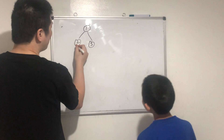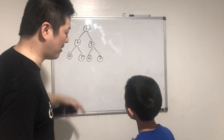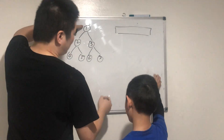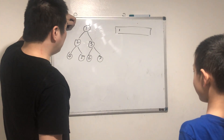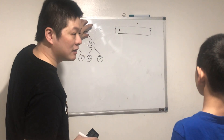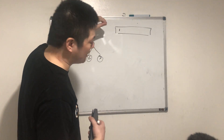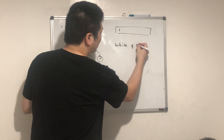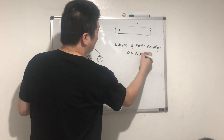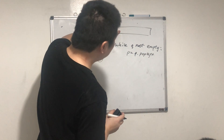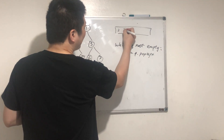Let's do the Breadth-First Search. We want to visit the nodes in 1, 2, 3, 4, 5, 6, 7 order. So we have a queue. First, we put node 1 in the queue — we call it enqueue. At the beginning, the queue is initialized with the root. Then we check if the queue is empty; if it's not empty, we keep going. We pop from the left: T equals queue dot pop left. What are node 1's children? 2 and 3 — put them in.